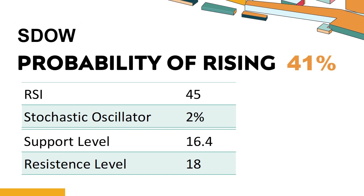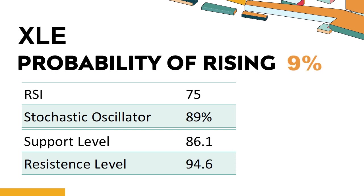Trend Outlook: SDOW has a 41% probability of rising stock price. When the probability of rising is lower than 50%, the probability of falling is relatively high. Combining multiple technical analysis indicators, SDOW has two bullish signals and three bearish signals. SDOW's short-term support level is 16.6; if it falls below 16.6, it will have a chance to test 16.4. The short-term resistance level is 17.5; if it breaks through 17.5, it will look up to 18.